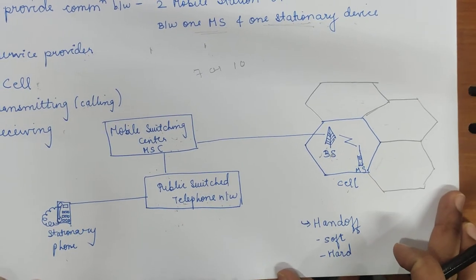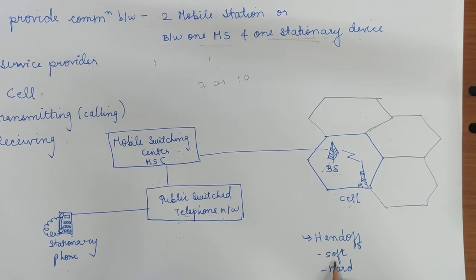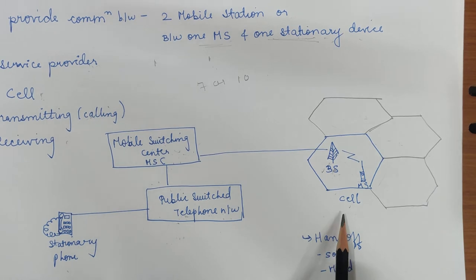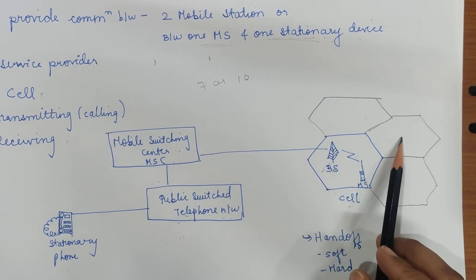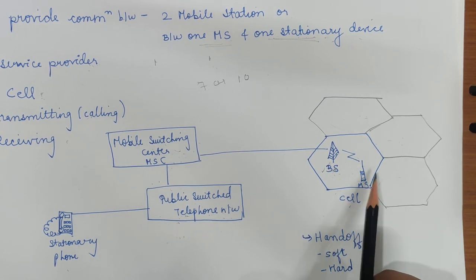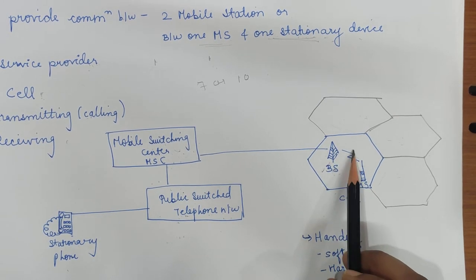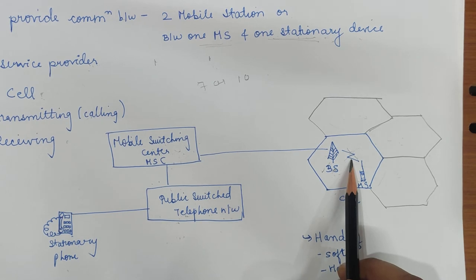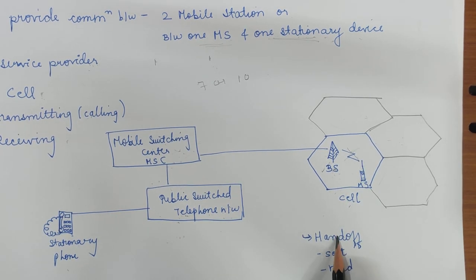Once the mobile station is found, the mobile switching center transmits the ringing signals. When the mobile station answers, voice communication between both parties takes place. One more important thing in cellular telephony is handoff. During a conversation, there is a chance that the mobile station moves from one cell to another, causing the base station signal to break or become weak.